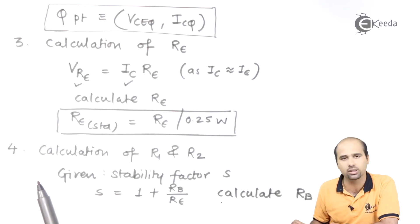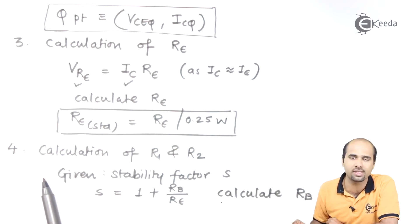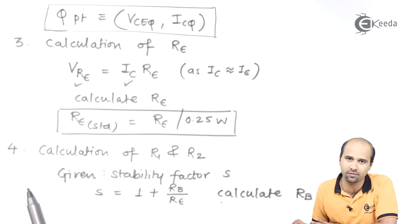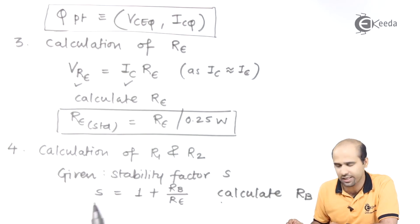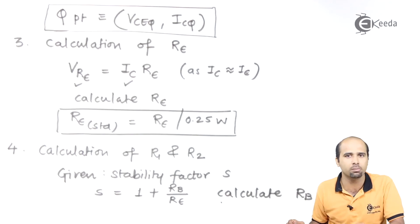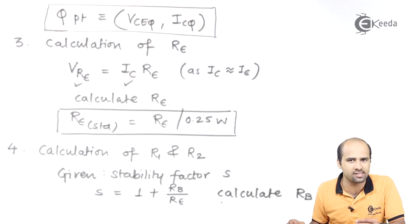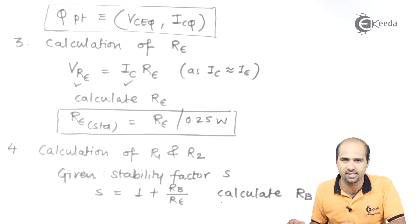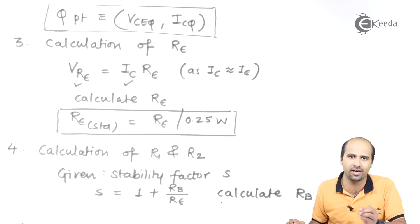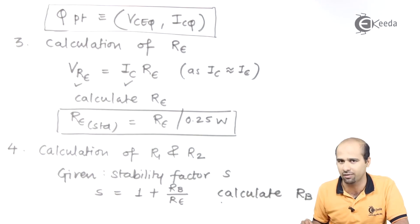Then we move to calculate R1 and R2. We make use of the stability factor, which may be given by the customer — it may be less than 10, such as 8 or 7. If not given, use a stability factor much less than 10; you can consider 6 or 7, because a lower stability factor means our circuit is more stable. We use potential divider biasing to calculate R1 and R2.